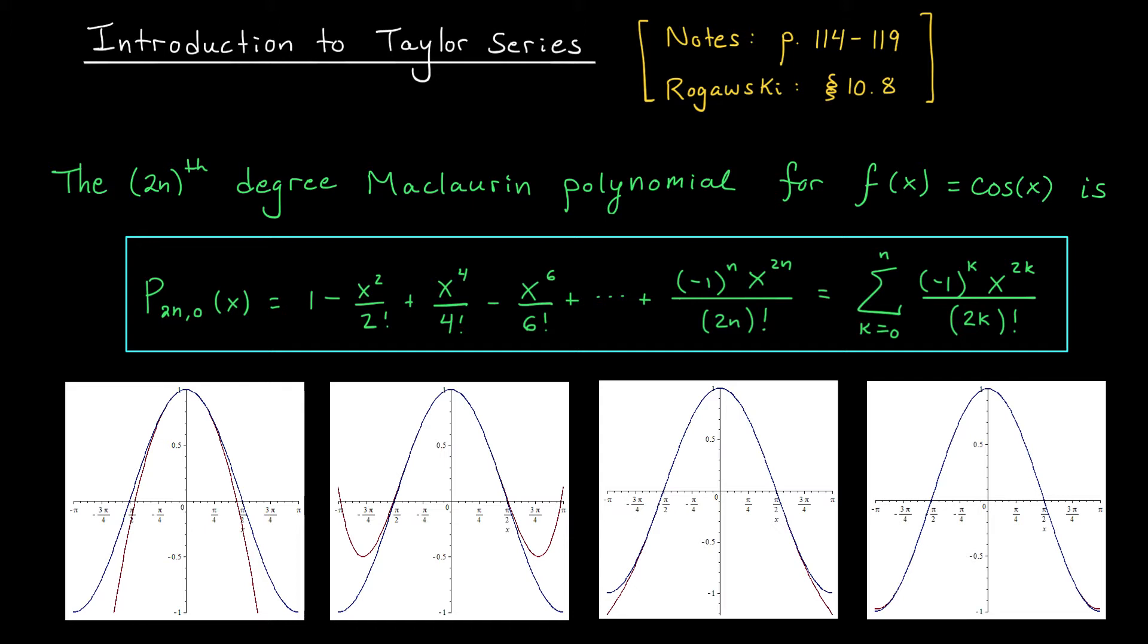In particular we'll see that for certain nice functions, using infinitely many terms leads to an exact approximation. The error term disappears entirely. That is, the function is equal to this infinite sum of polynomial terms, which we refer to as its Taylor series. This video will be an introduction to Taylor series, and it covers pages 114 to 119 of the course notes. Please make sure you've read them.